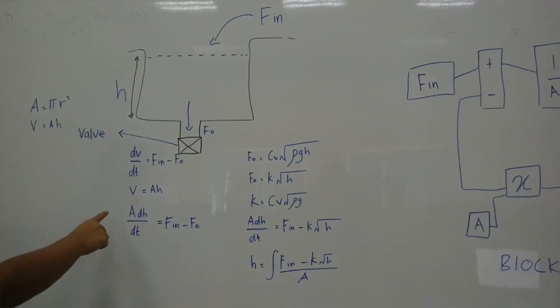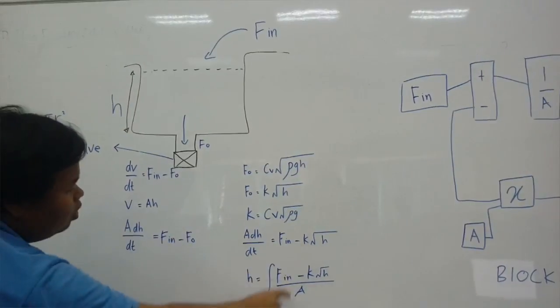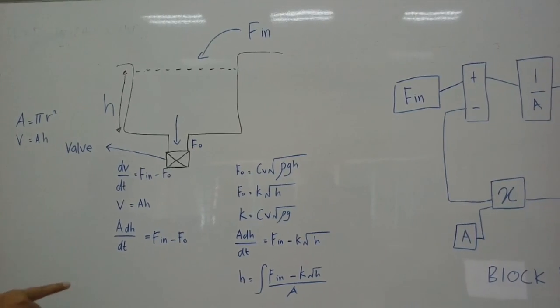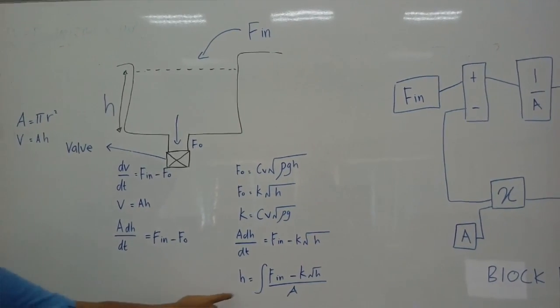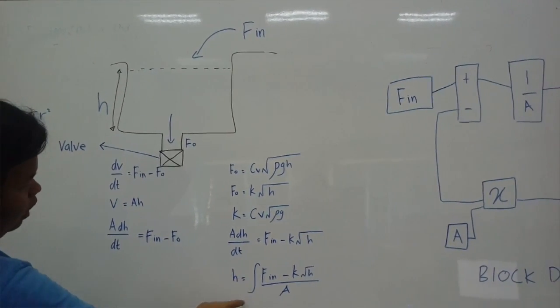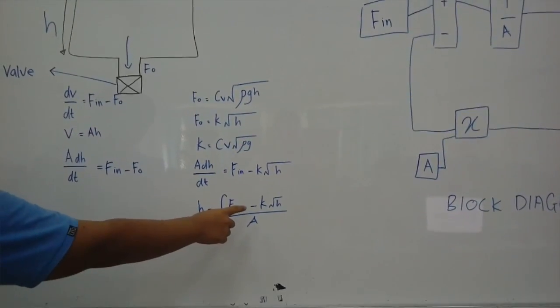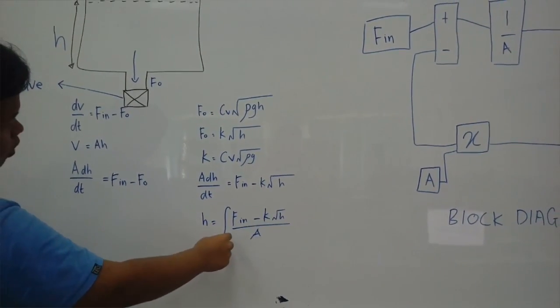This is the solution for finding the value of h. Finally, we can get h equal to the integral of Fin minus k times square root of h over A.